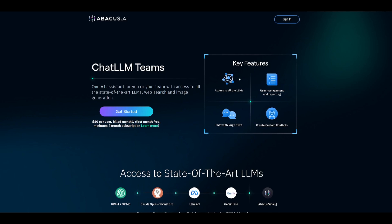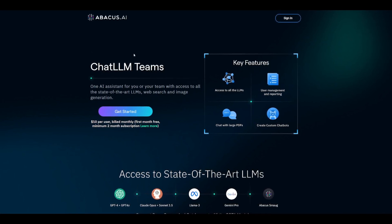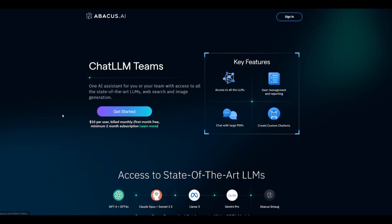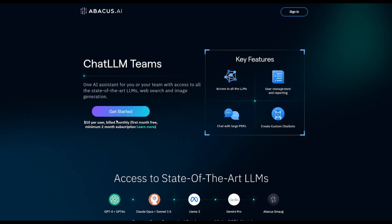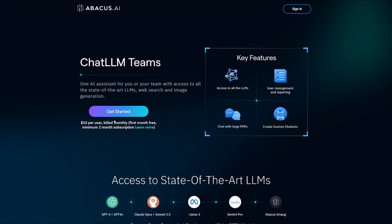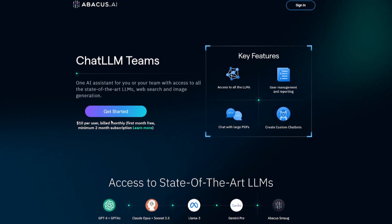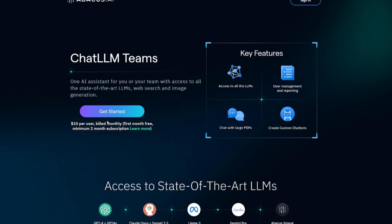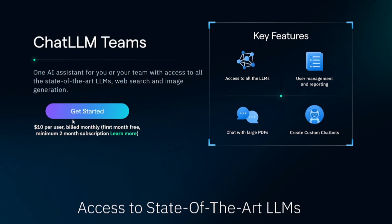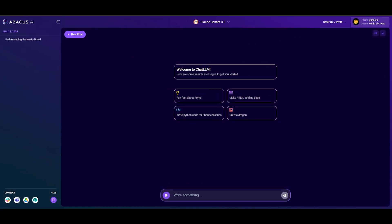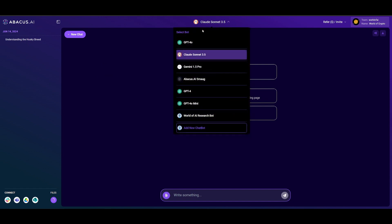If you're interested in accessing this, click on the get started button. It's $10 per user billed monthly, and the first month is completely free. So you can get started for free for the first month and cancel anytime. Once you create an account, you'll be sent to a dashboard where you can access all of these new features and all of these models in one particular area.